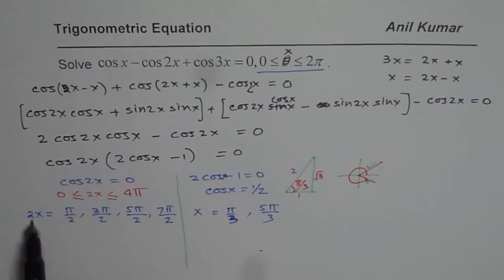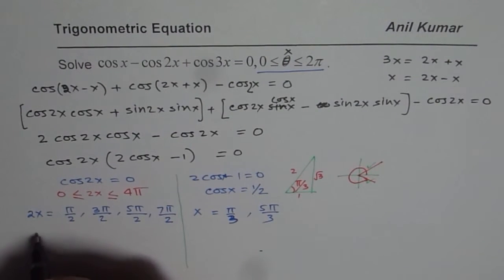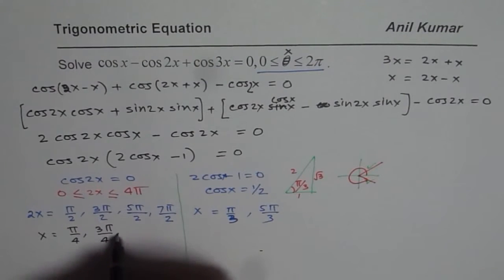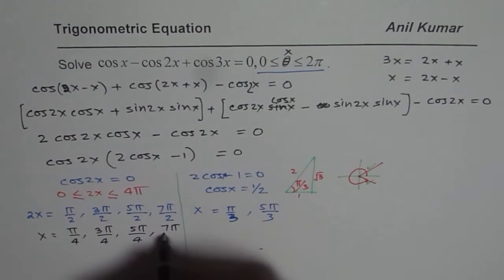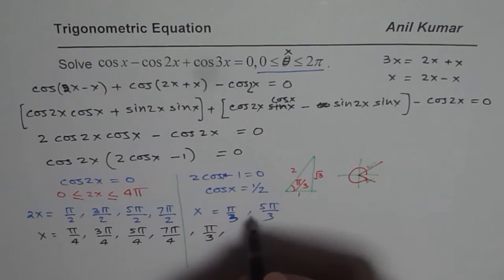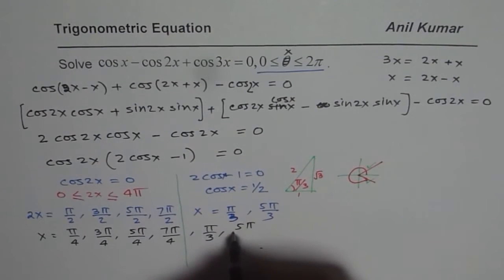The first factor gave us 2x solutions. Now we will write down the solutions for x, dividing them each by 2. So we get π/4, 3π/4, 5π/4, 7π/4. And from here, we have π/3 and 5π/3. So these are all the solutions for the given equation.